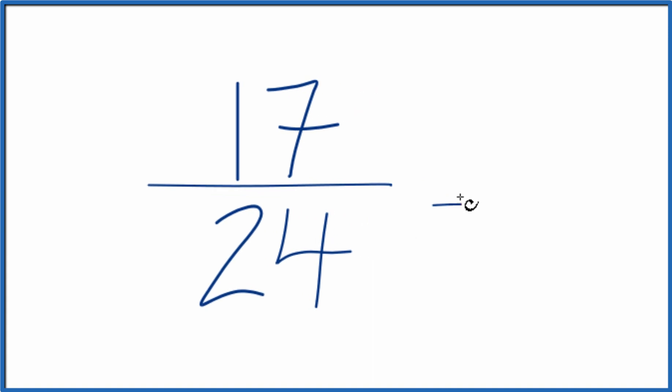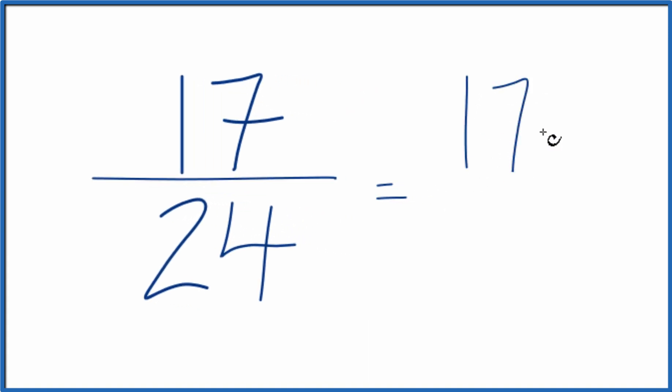So we could divide 17 by 1 and that would give us 17. 24 by 1, that gives us 24, which is the same thing.